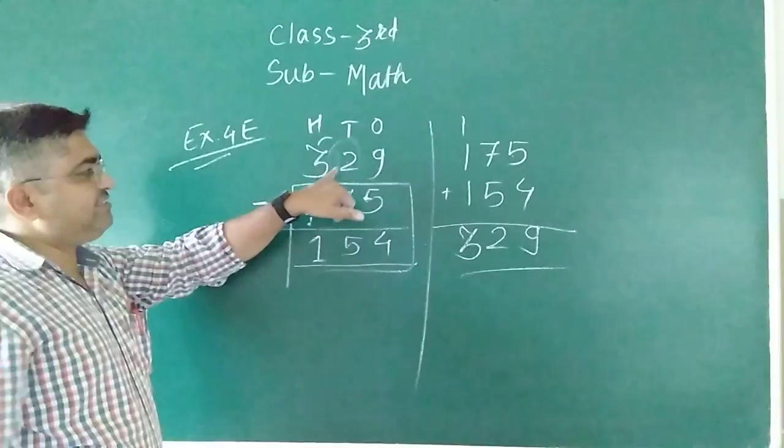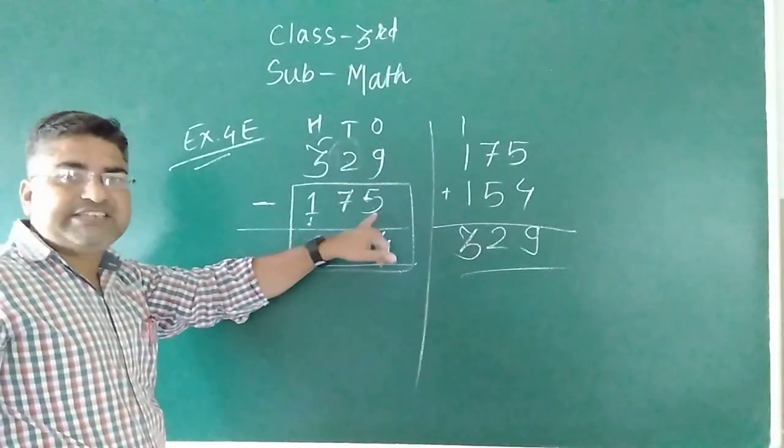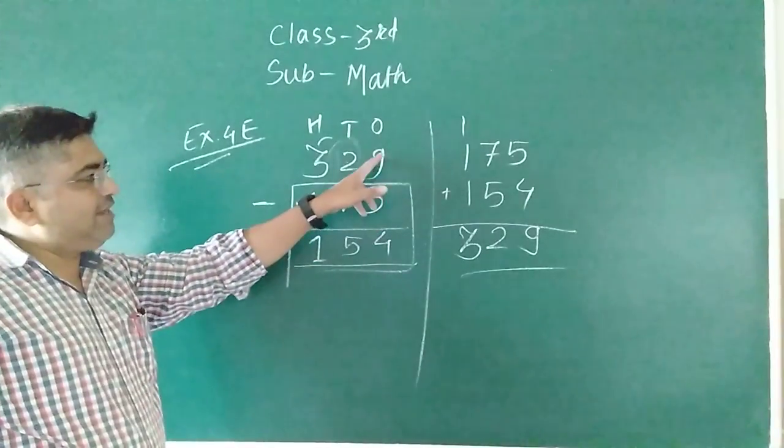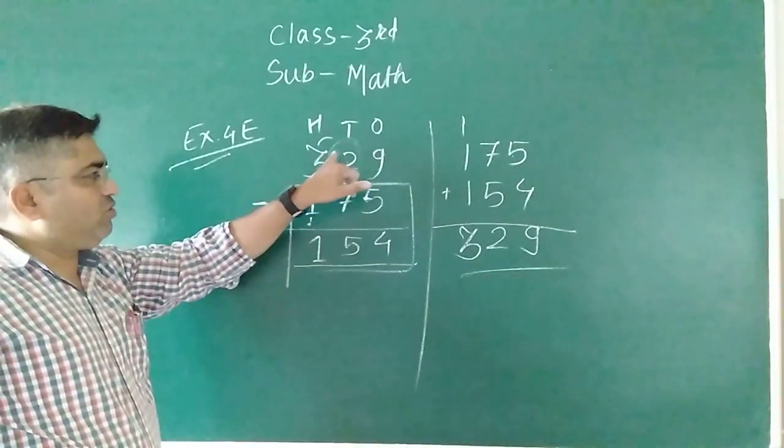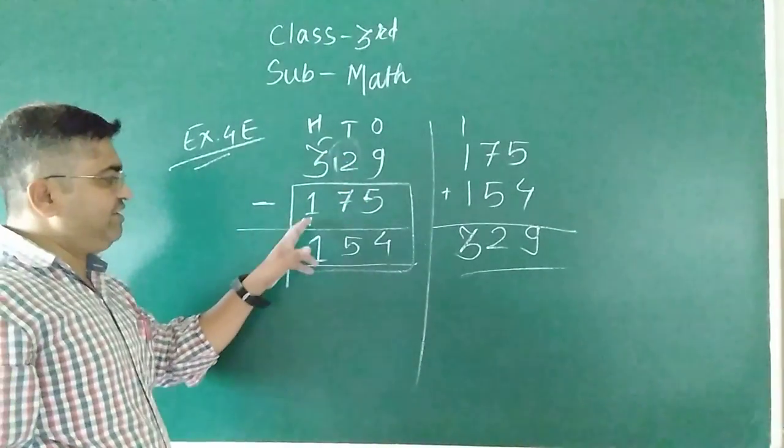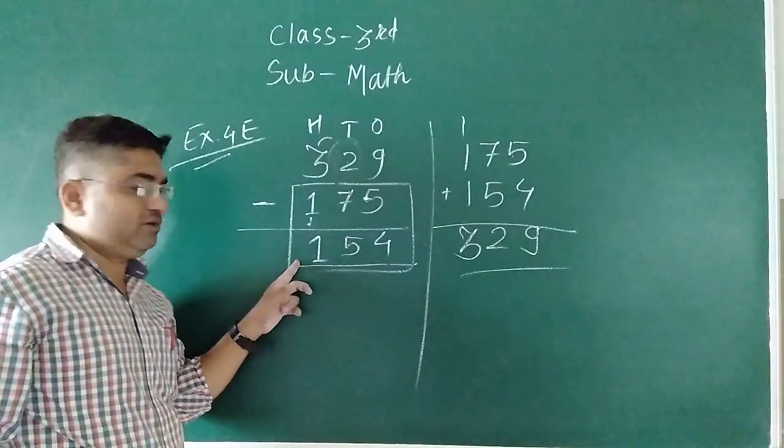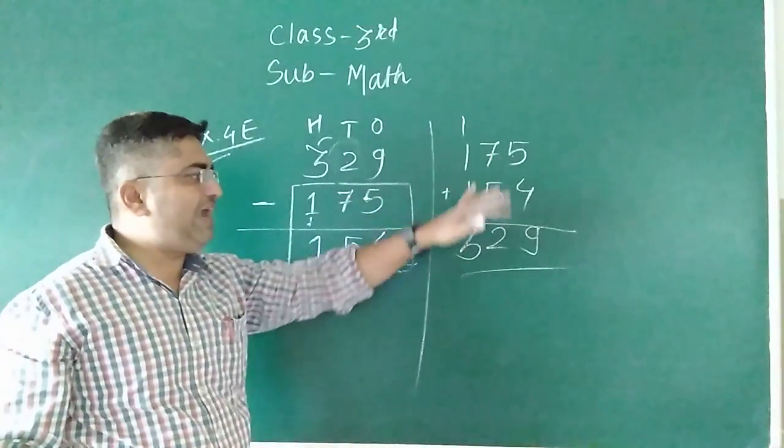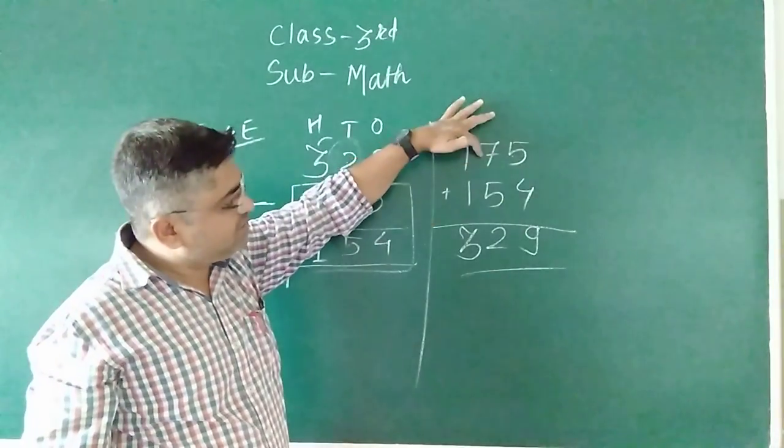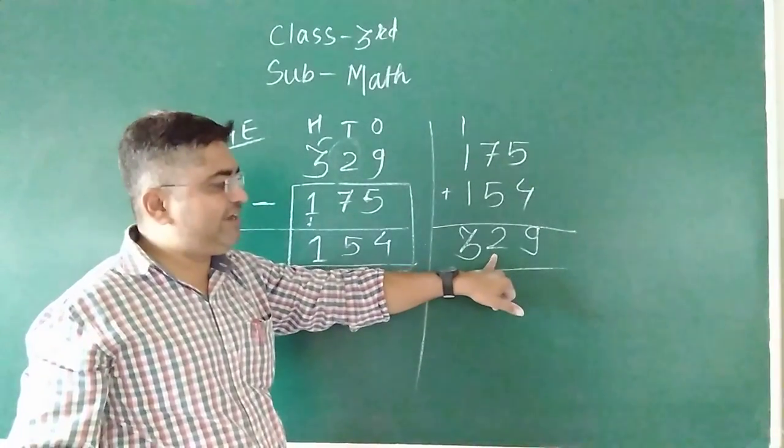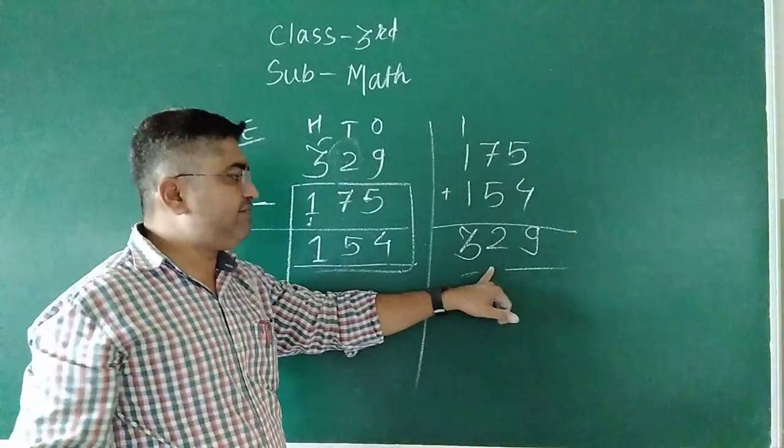See here again, this number is 329. This is the method we see, 329 minused 175. The answer is 9 minus 5 equals 4. 2 minus 7 is not possible, so we do regrouping. 12 minus 7 is 5, return. 3 minus 2 is 1. Answer: 154. And 154 plus 175, adding: 5 plus 4 is 9, 7 plus 5 is 12, write 2 carry 1. 1 plus 1 plus 1 is 3. 329, so this is our answer.